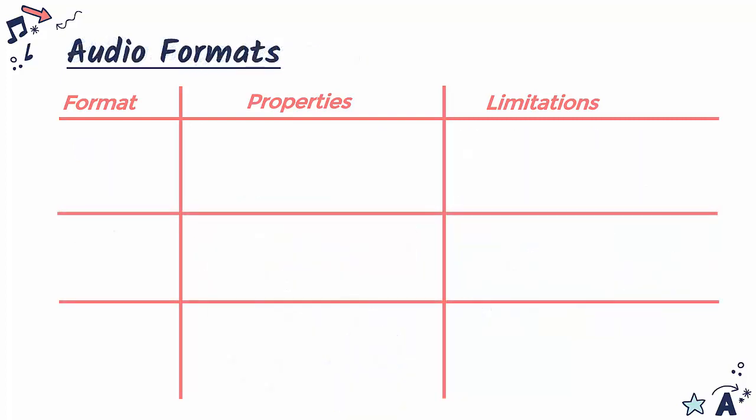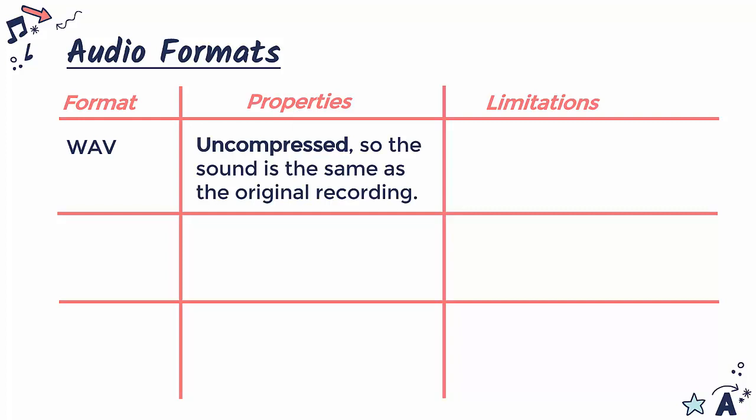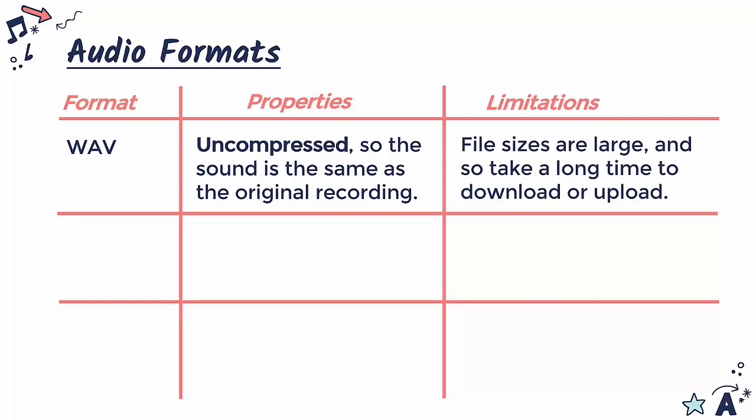Moving on to a few more file formats - this time we're looking at audio formats, so how we can store sound in a computer. The first one is WAV. A WAV file is uncompressed, so importantly your sound will be the same as the original recording. WAVs are used by people who really care about high quality audio. But of course, the more data you are storing, the larger the file size will be, which is especially noticeable when downloading or uploading files - you may take a while to download a song if it's stored as a WAV.